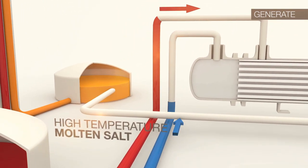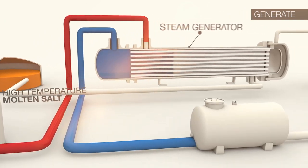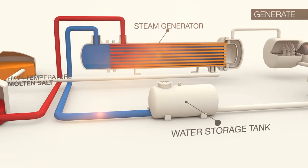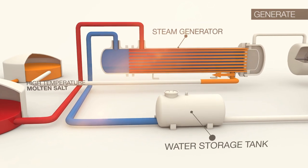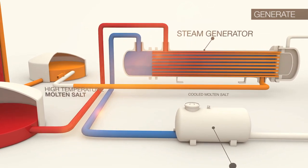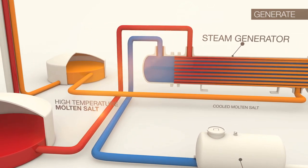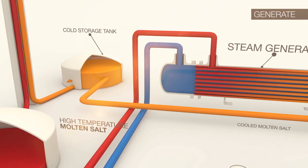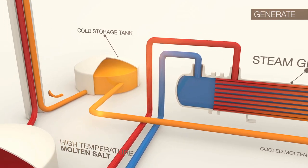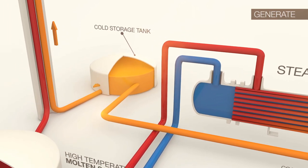the high temperature molten salt flows into the steam generator as water is piped in from the water storage tank to generate steam. Once the hot salt is used to create steam, the cooled molten salt is then piped back into the cold salt storage tank where it will then flow back up the receiver to be reheated as the process continues.